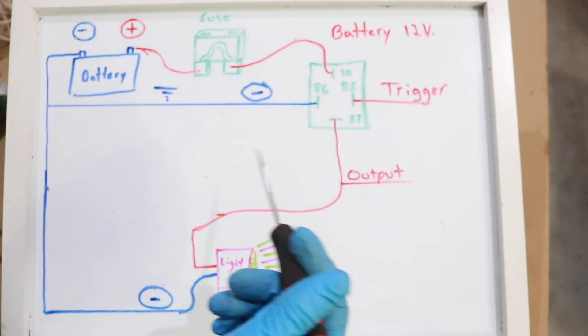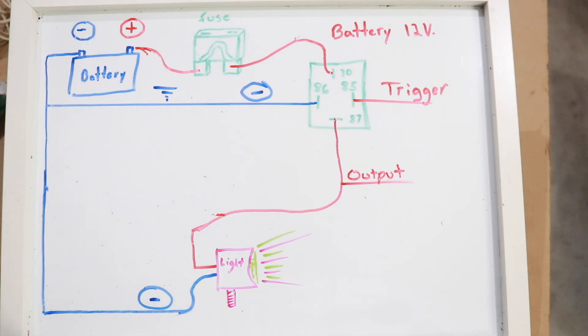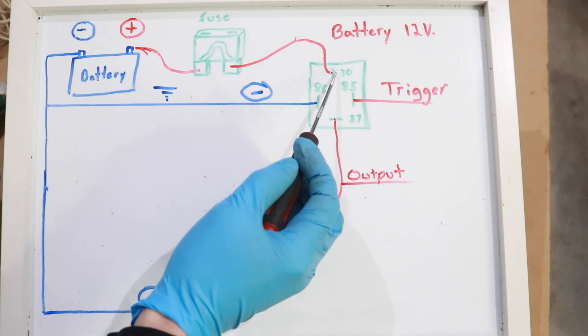For the 12-volt trigger line, you could wire that into your ignition or a toggle switch. When you supply 12 volts of power, it bridges 30 and 87.